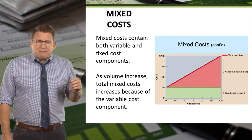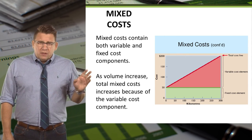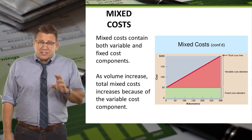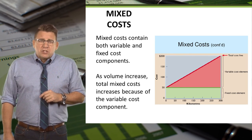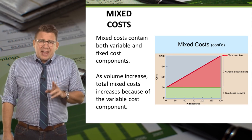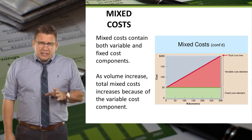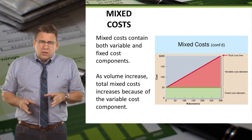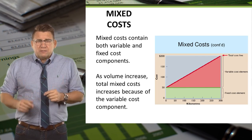This is what the graph of mixed costs looks like. Notice that at zero volume, the line isn't starting at the origin. This is because fixed costs are included or incurred regardless of volume. So the total cost line starts at the fixed costs and increases as variable costs increase. Finally, an example of a mixed cost is a salesperson's salary, which might include a fixed salary as well as a commission, which is a variable cost.